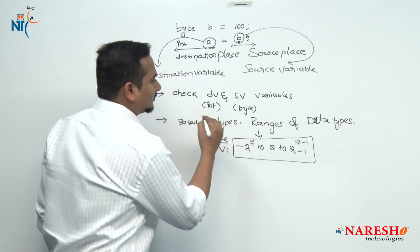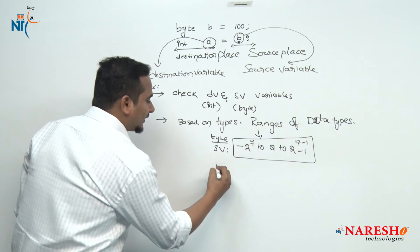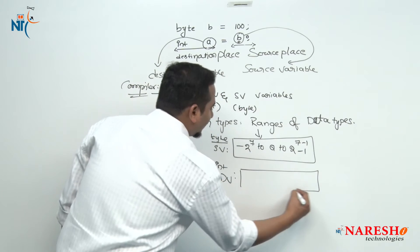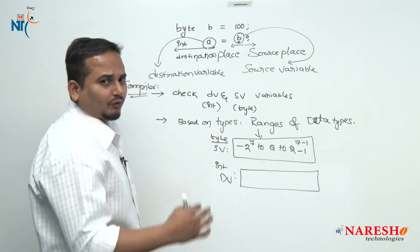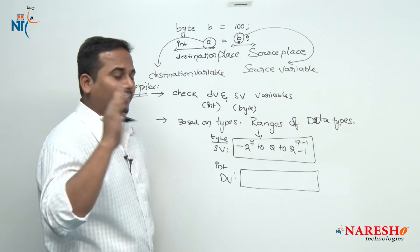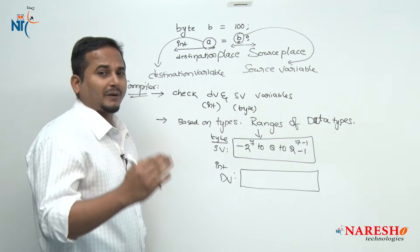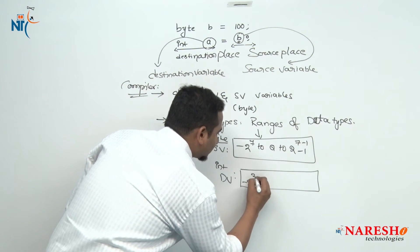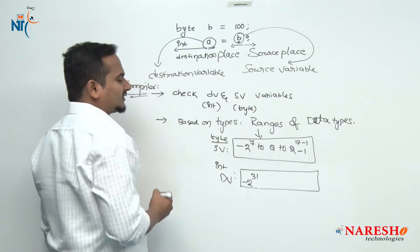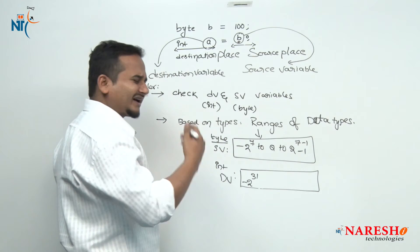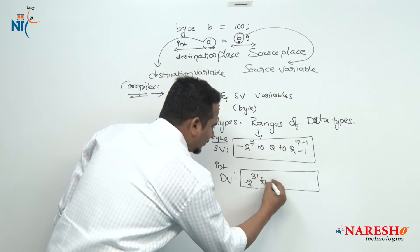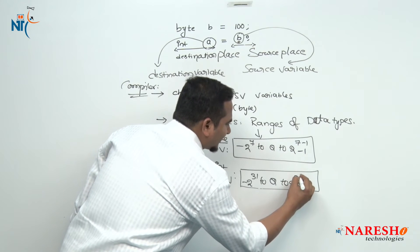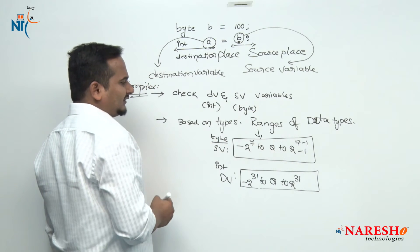Now what is the range of int — the destination variable? In Java, int provides 4 bytes of memory, so 4 bytes is 32 bits. The range is minus 2 to the power 31 to 2 to the power 31 minus 1. So like this we can calculate the ranges.